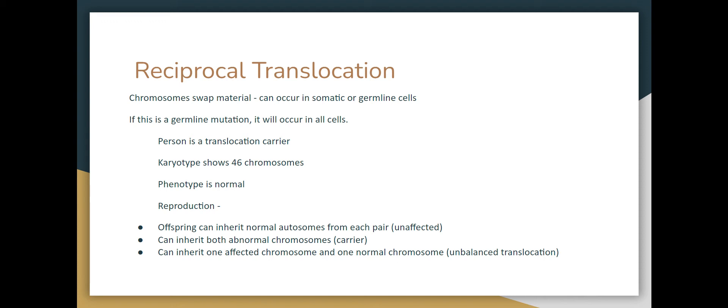If it's a germline mutation, it occurs in all the cells, and the person is called a balanced translocation carrier. The karyotype will show 46 chromosomes. The phenotype is normal because all of the genes that need to be there to express their traits are there — there are no extras and none missing. That's what balanced means.